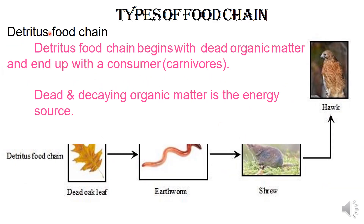Next, indigenous food chain. In this food chain, it begins from dead organic matter. Dead and decaying organic matter — that is, dead plants and animals — is the main source of energy. It starts the food chain and is called the indigenous food chain.